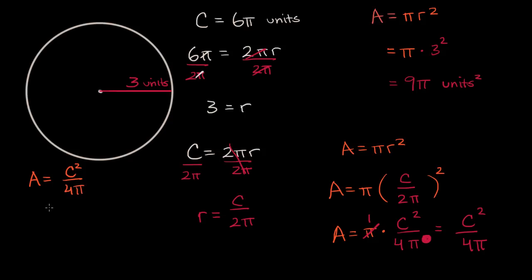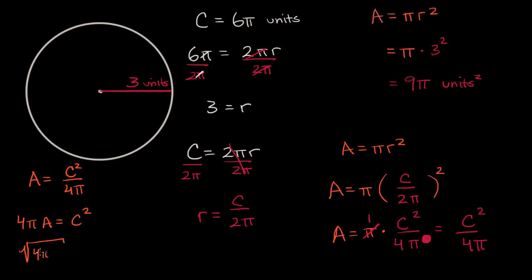And we can go the other way around. Given an area, how do we figure out circumference? We could just put the numbers in here, or you could solve for c. Let's multiply both sides by four pi. We would get four pi times the area is equal to our circumference squared. And then to solve for the circumference, we just take the square root of both sides. So you would get the square root of four pi times the area is equal to our circumference. You could simplify this a little bit — you could take the four out of the radical. But this is pretty neat, how you can relate circumference and area.